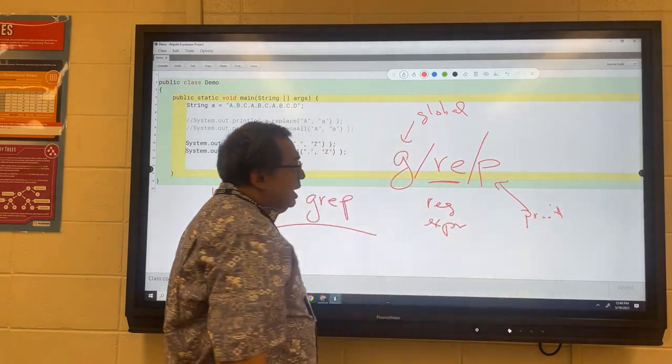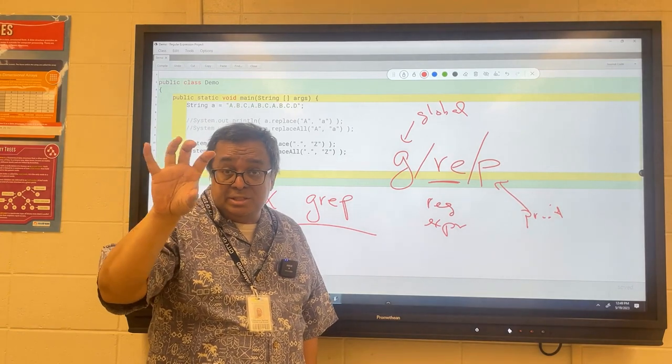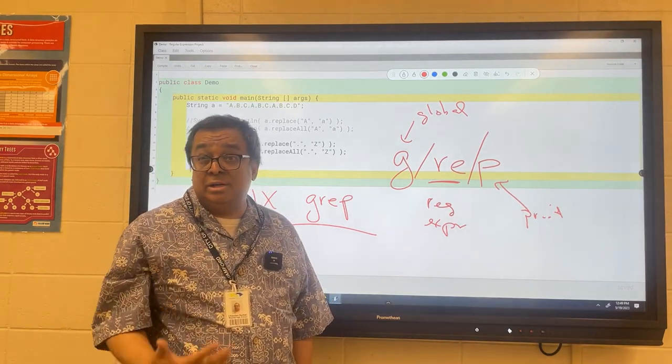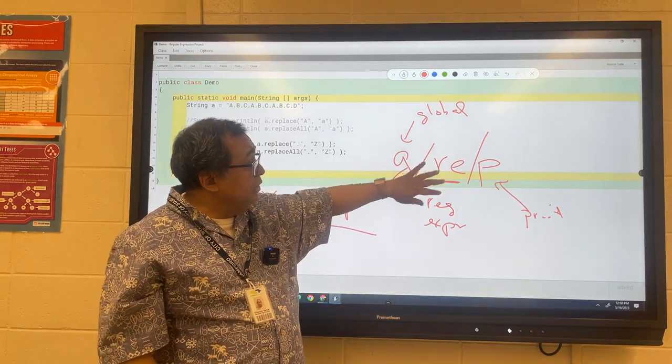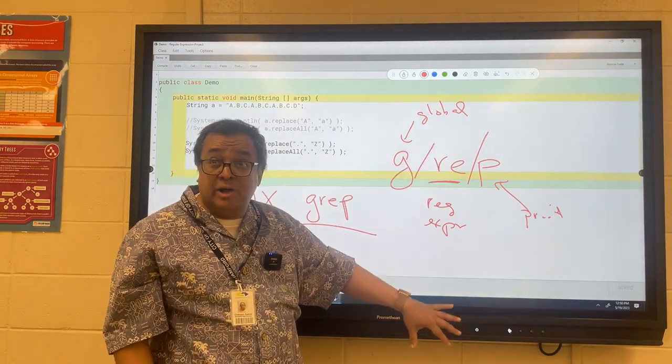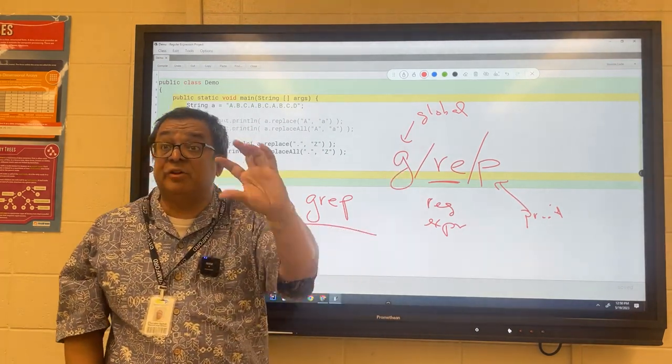The criteria are given by the regular expression. Global means we want to look for this criteria through the whole file and identify every piece that matches. If the G is not there, we only identify the first occurrence. If the G is there, we identify all occurrences, and then we select out or print the ones that match our criteria.